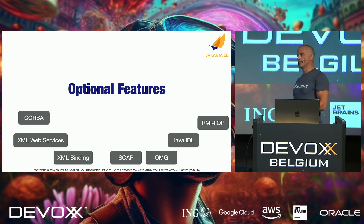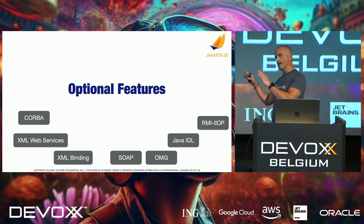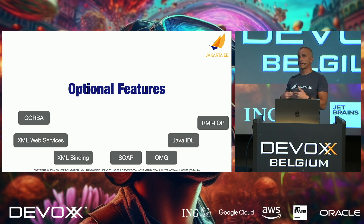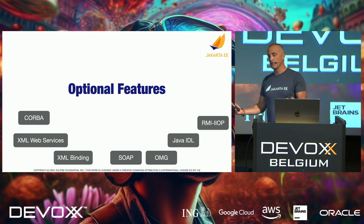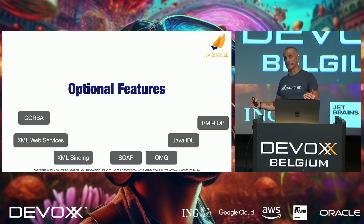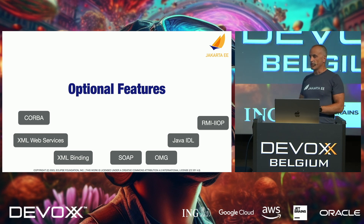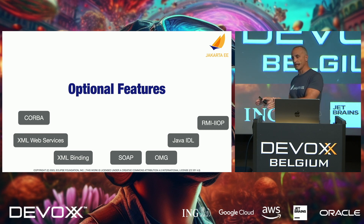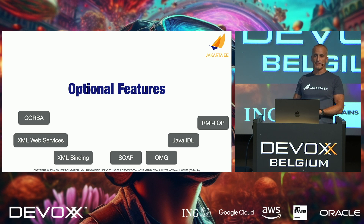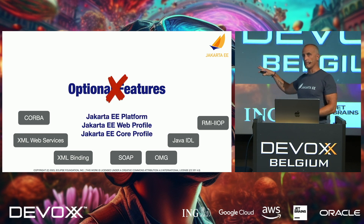We're also cleaning up optional features. Individual specifications can still have optional features, but we do have some optional specifications and optional features in the platform, web profile, and core profile that we want to make easier for implementers. So we're removing all optional things from the platform specification — that means removing everything that was deprecated in EE 9 and EE 10, such as CORBA, XML, SOAP, and other protocols that aren't much used anymore. We're removing them fully in EE 11.